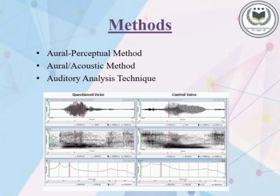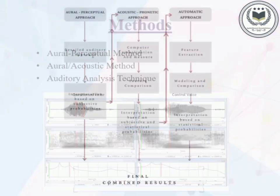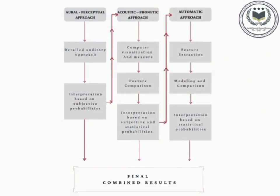Now the question arises: how do we do forensic speaker profiling? There are three methods — namely the oral perceptual method, the oral acoustic method, and the auditory analysis technique. The evidence is mainly in the form of telephonic conversations, tape recordings, and digital recordings of speeches, which are prepared into speech transcripts.